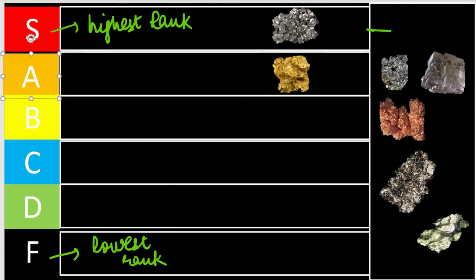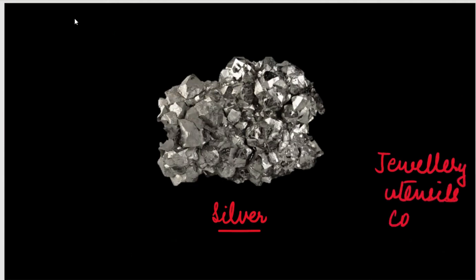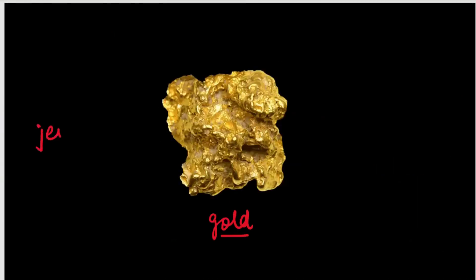I will tell you a few uses. If we talk about silver, this is silver metal. Silver is used in jewelry, it is used in utensils, and also in coins — so these are silver's uses. If we talk about gold, same way, gold is also used in jewelry and in utensils.